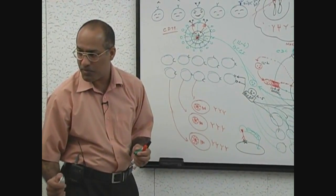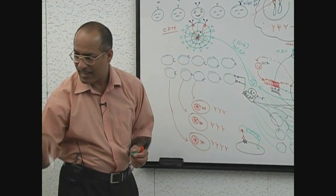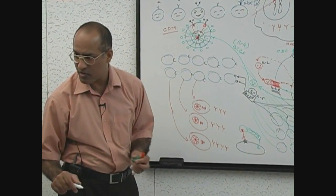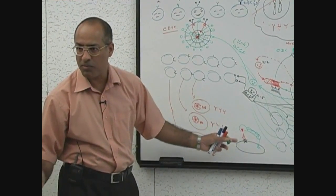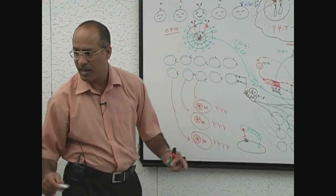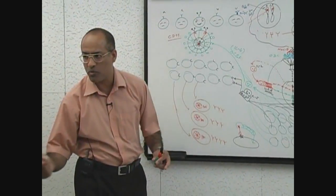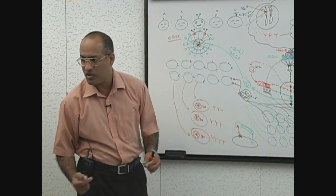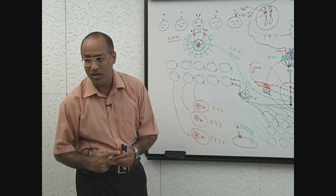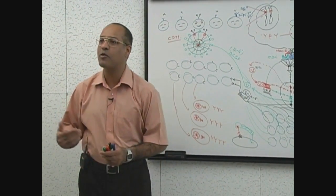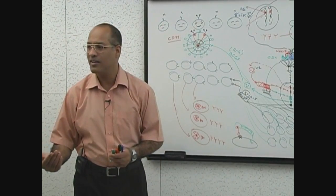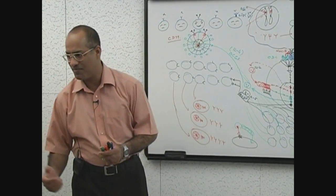This activated complement will kill the bacteria. These complement molecules are normally present in your blood — the liver produces complement molecules. We call them complement molecules because they complement the immune system.